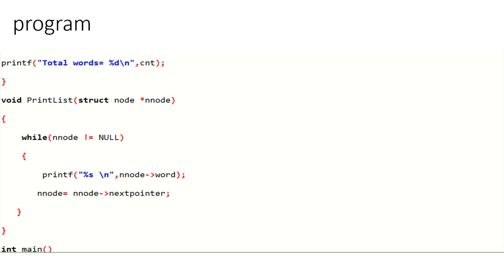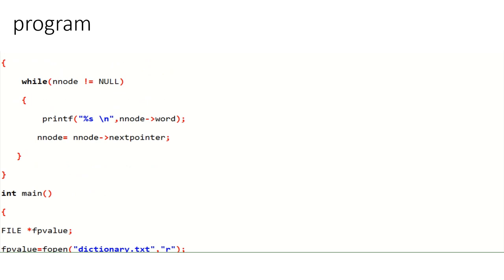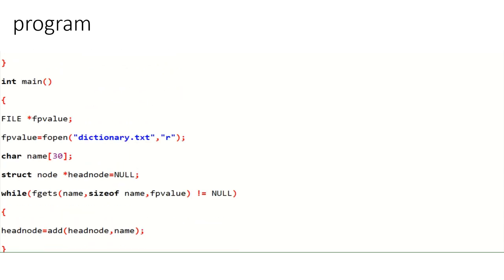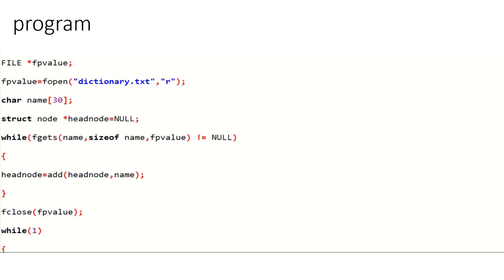The void printlist function takes a struct node pointer. While the new node is not null, it prints the word and address of each node. In the main function, a file pointer fp is declared. The dictionary is stored in a file. fp is set using fopen to open the dictionary file. A character array 'name' of size 30 is declared. While fgets reads names from the file, head node is updated by calling the add function.